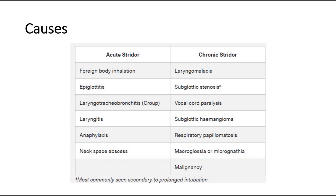Whereas chronic stridor is caused by laryngomalacia, subglottic stenosis, vocal cord paralysis, subglottic hemangioma, respiratory papillomatosis, macroglossia or micrognathia, and malignancy.